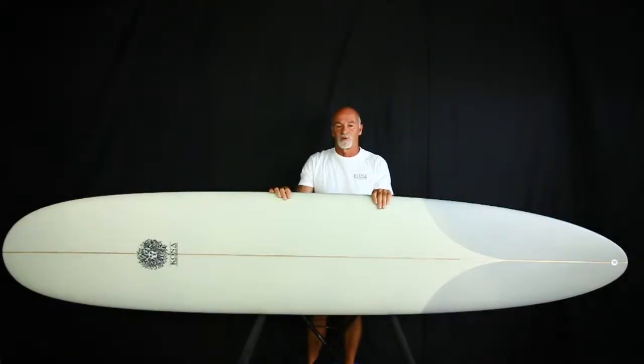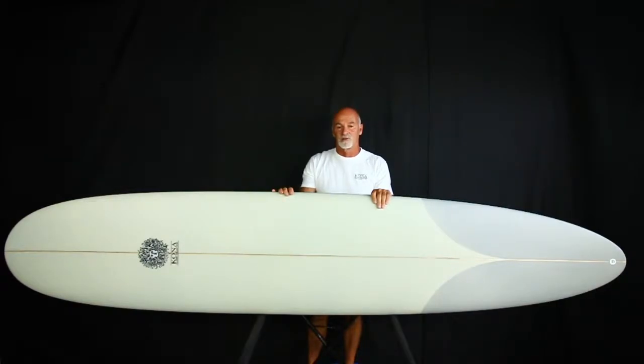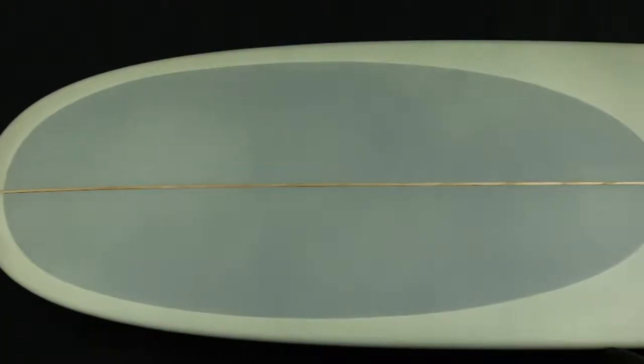The Owen is a traditional outlined longboard. It features a smoothed out nose to create lift and gives the board rider more stability while nose riding.